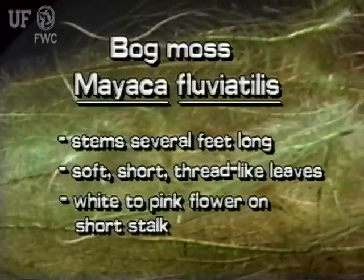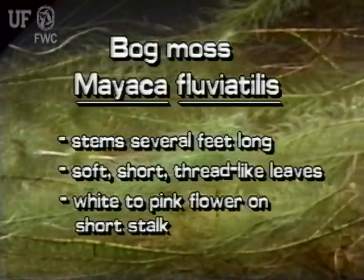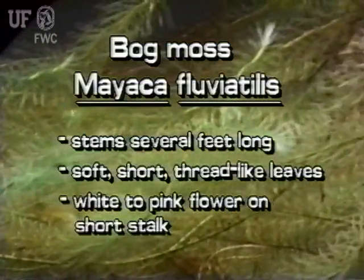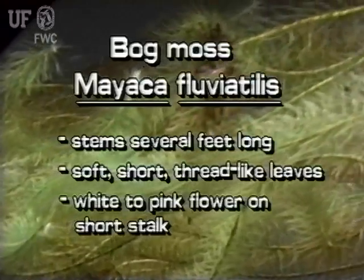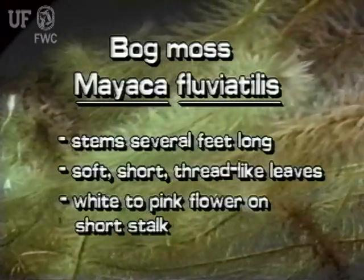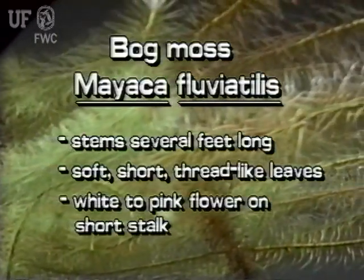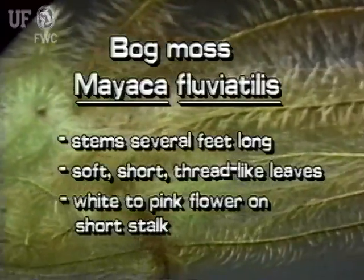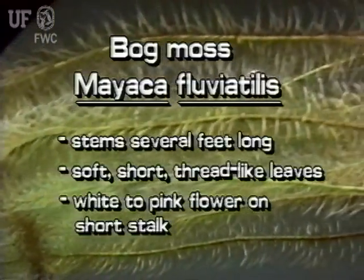Remember, submersed bog moss stems are usually several feet long. Its leaves are soft, short, and thread-like, with no divisions. Its flowers are white to pink and grow on short stalks.